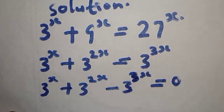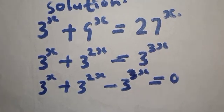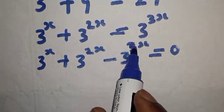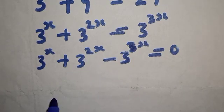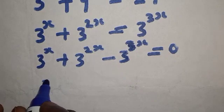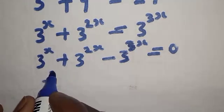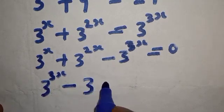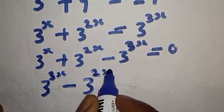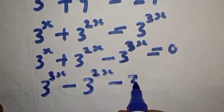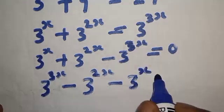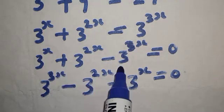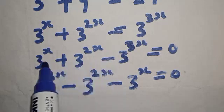We can also rewrite this as: since this term has a power of 3x, we rearrange to get 3 raised to power 3x minus 3 raised to power 2x minus 3 raised to power x equal to zero. Then we transform the negative terms into a factored form.